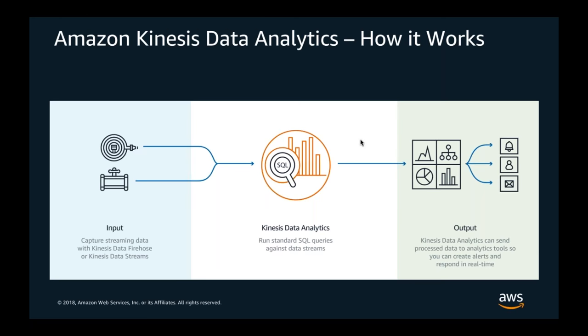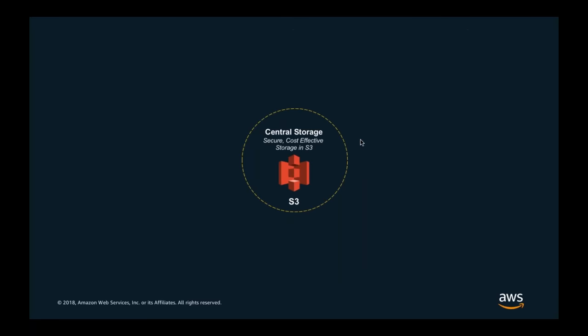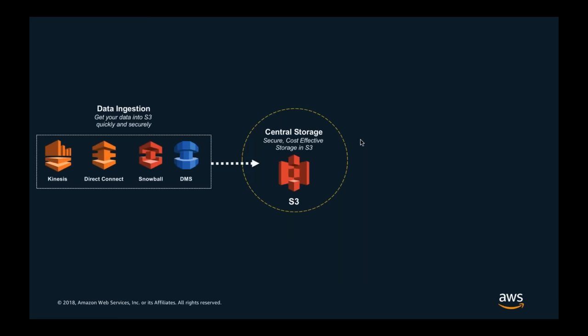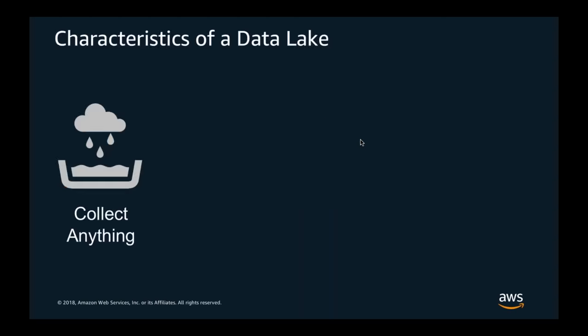All of these Kinesis services fit in the near real-time or real-time space for ingesting and processing data. Going back to the architecture diagram, S3 sits at the center as centralized storage, with various ingestion options: Kinesis for near real-time streaming data, Direct Connect for connectivity, and Snowball and DMS for migrating or replicating data from data centers to S3.